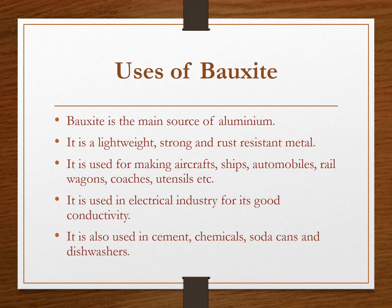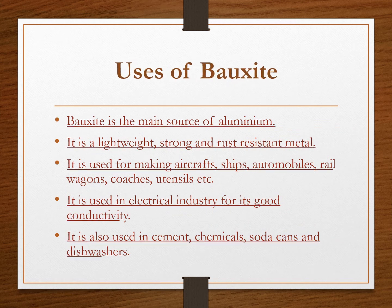Bauxite is the main source of aluminium. It is a lightweight, strong, and rust-resistant metal. It is used for making aircraft, ships, automobiles, rail wagons, coaches, utensils, etc. It is used in the electrical industry for its good conductivity. It is also used in cement, chemicals, soda cans, and dishwashers.